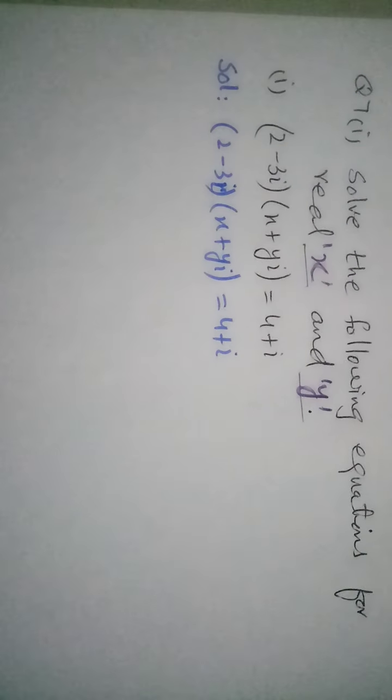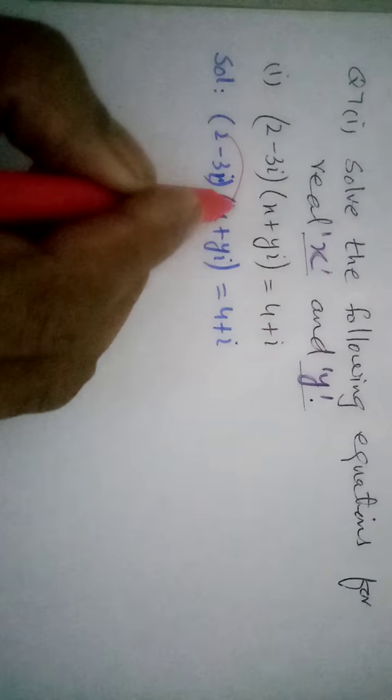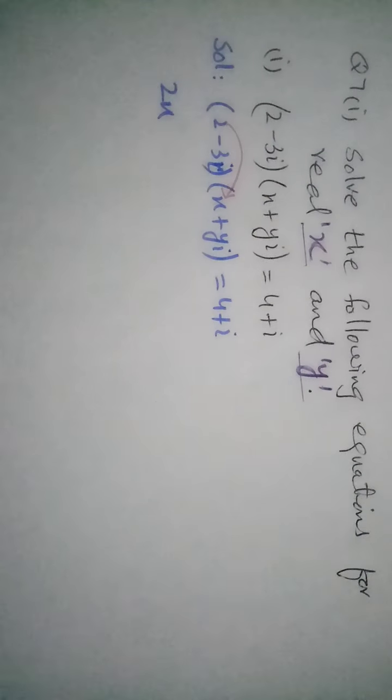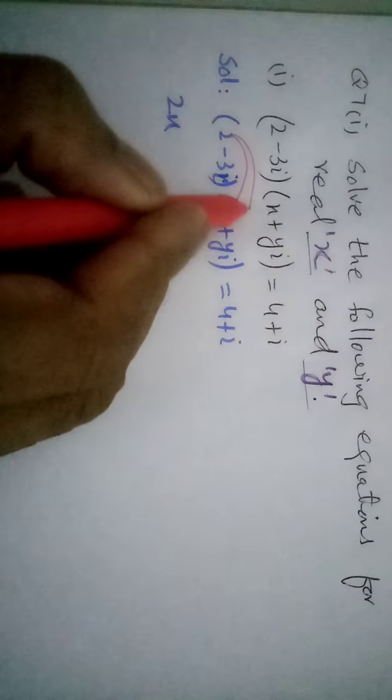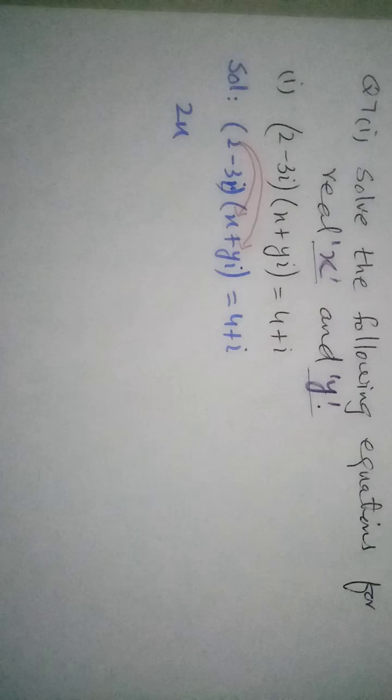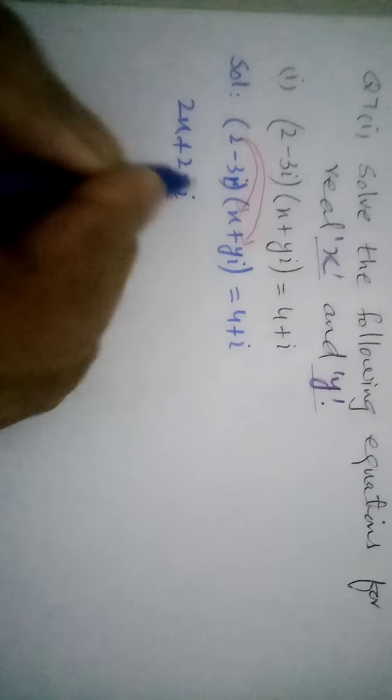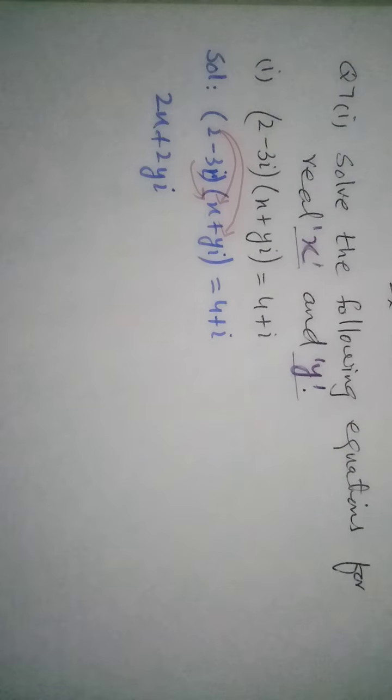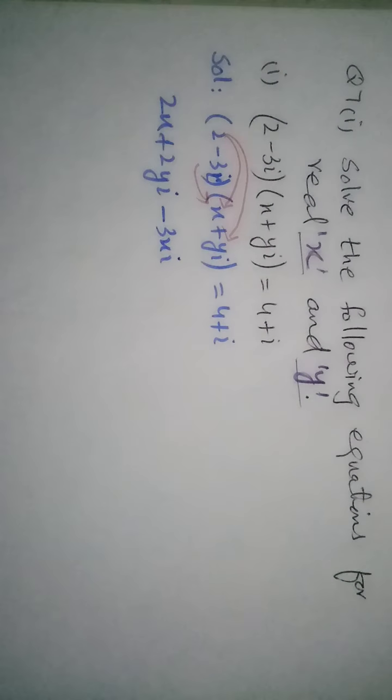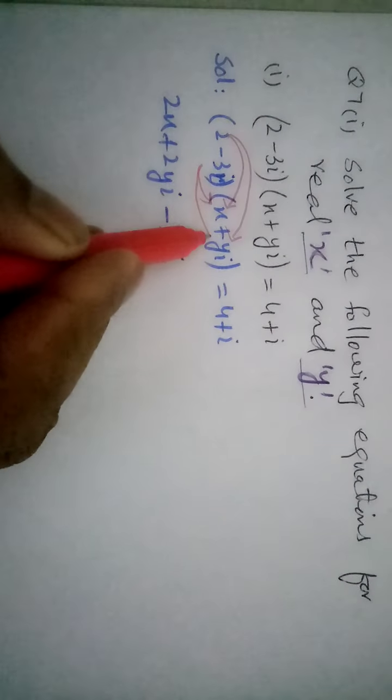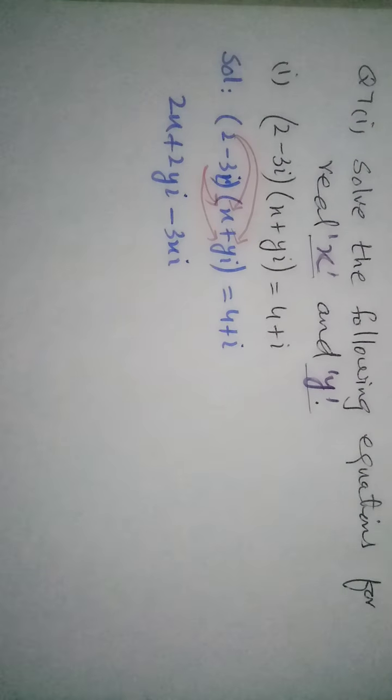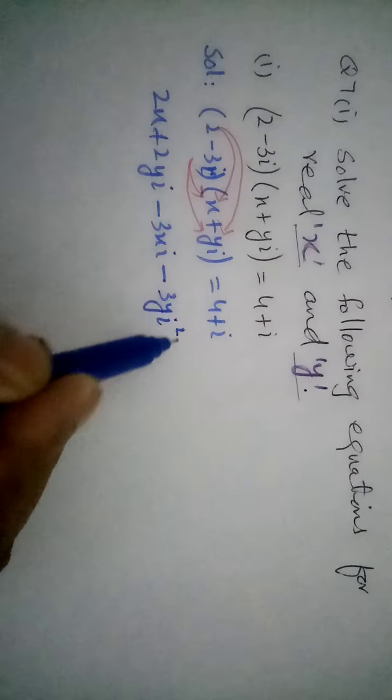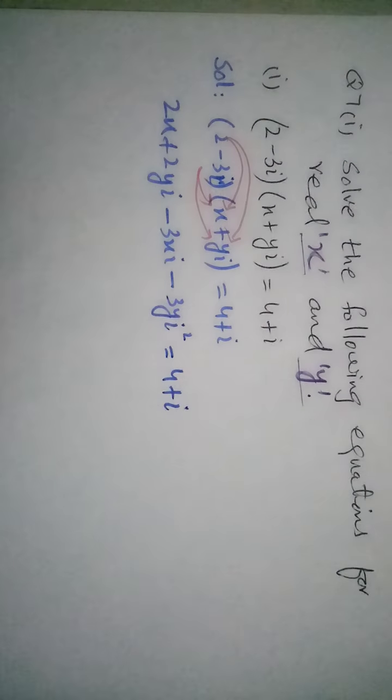So by solving it, first we multiply this 2 by this x and we get 2x. Then 2 will multiply by again, 2 multiplied by y iota and we get plus 2y iota. Then minus 3 multiplied by this x and we get minus 3x iota. And again minus 3 multiply by plus y iota, and here plus minus, minus 3y iota square is equal to 4 plus iota.